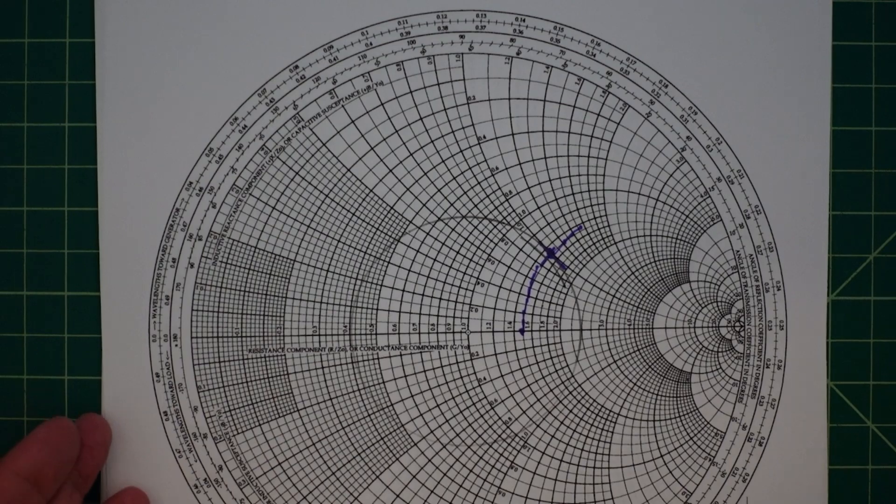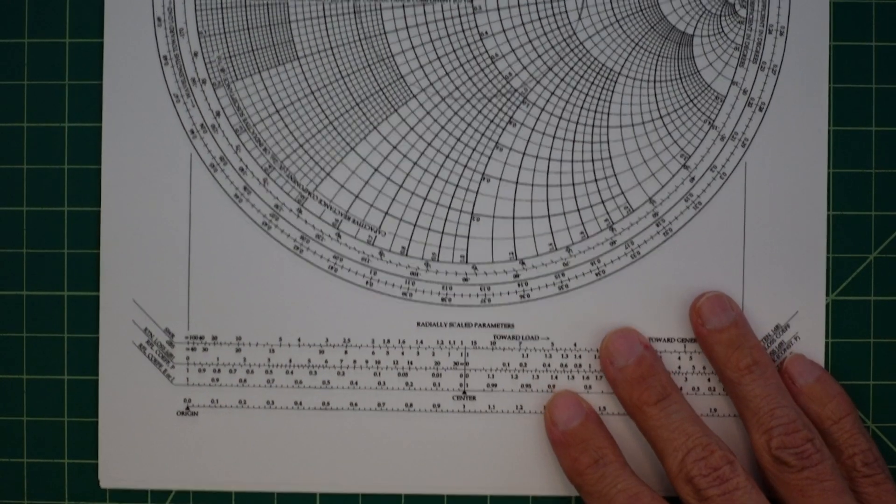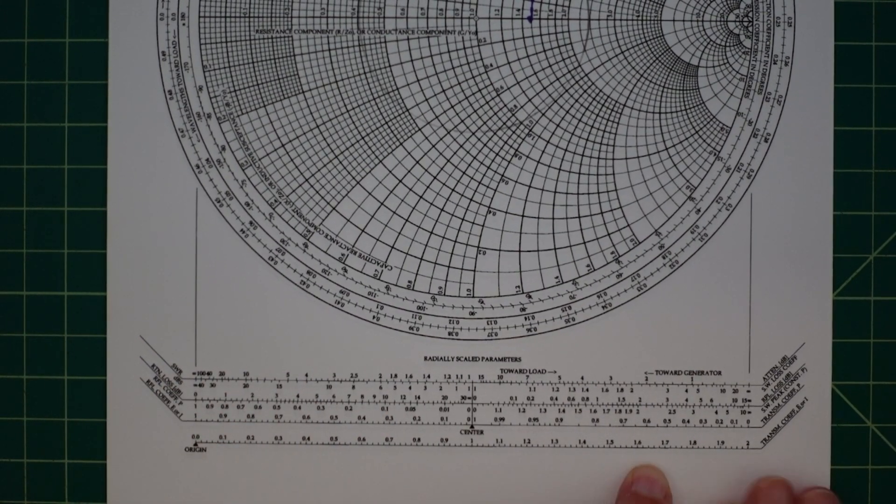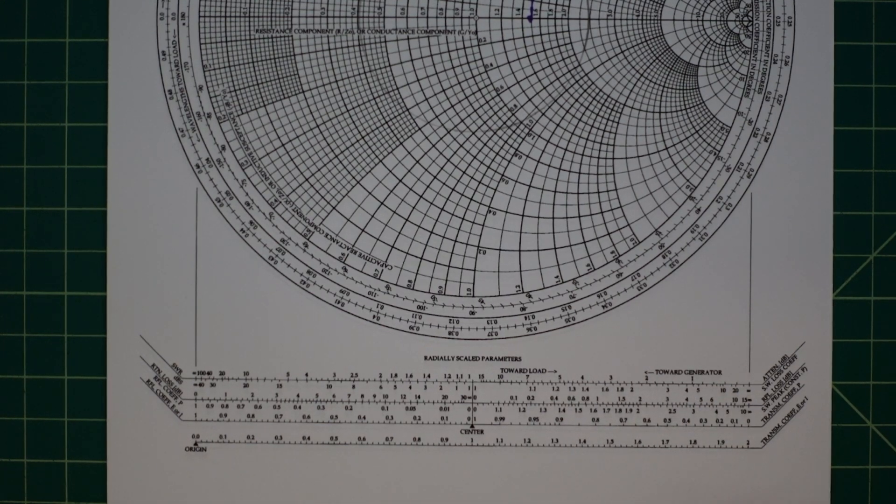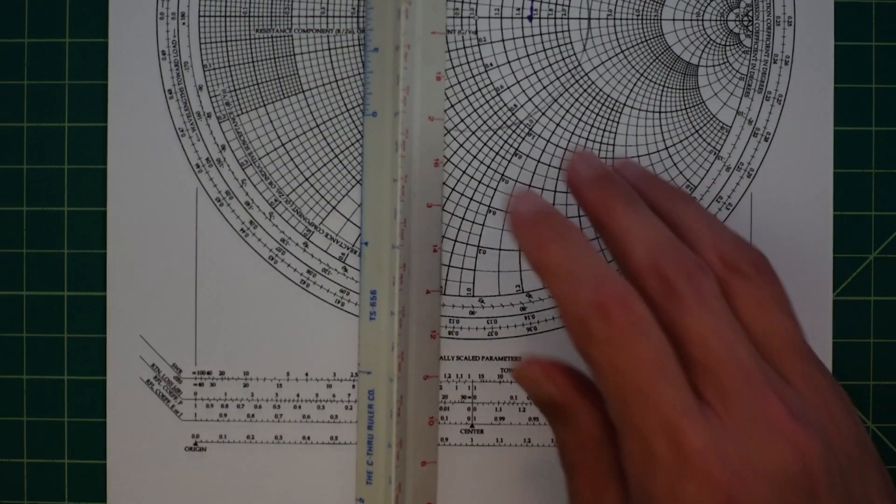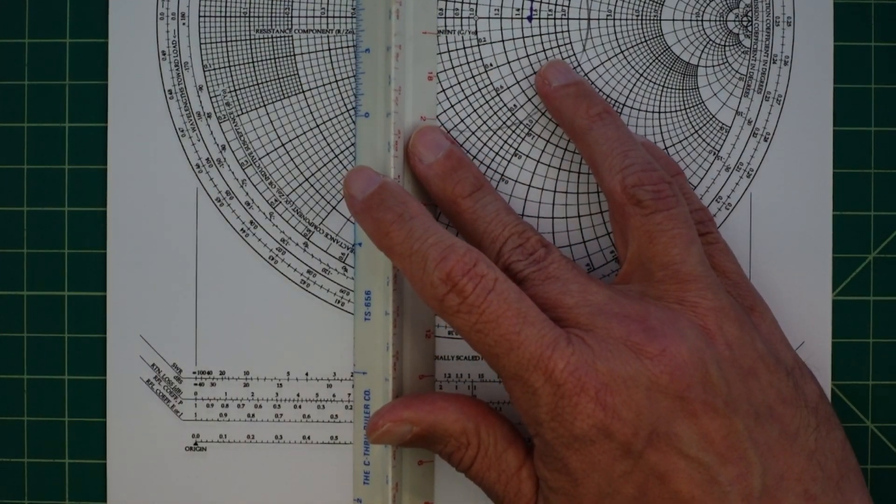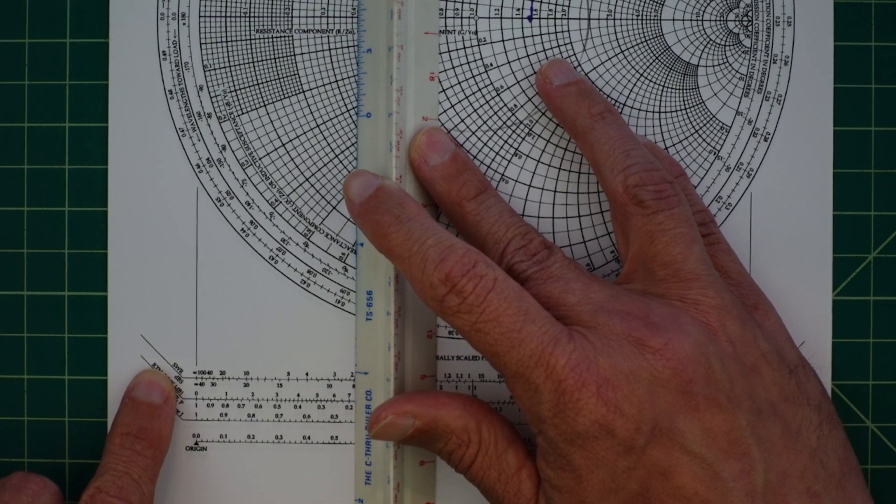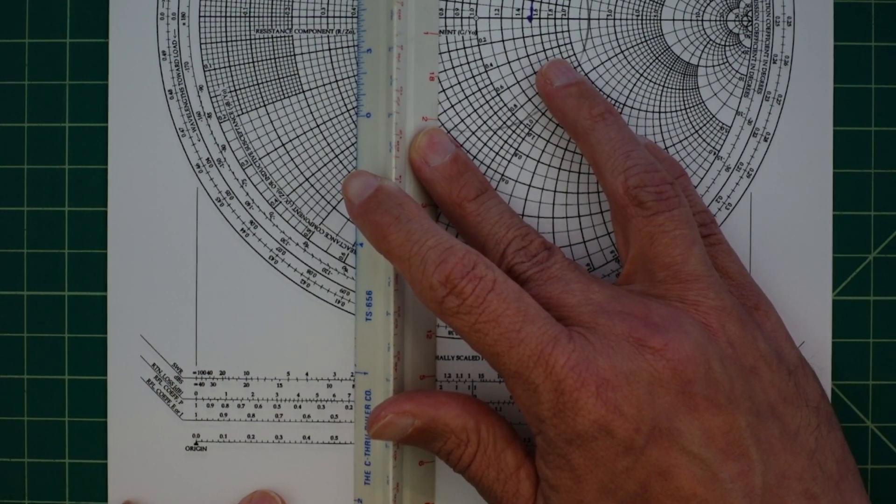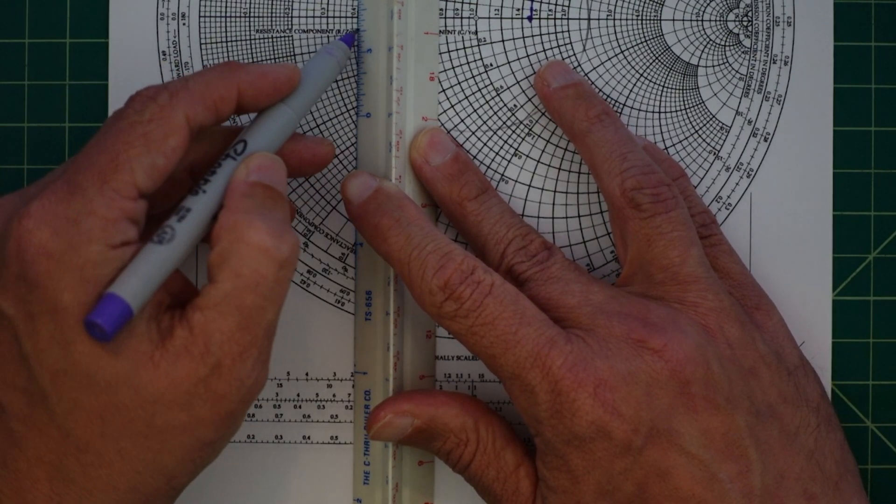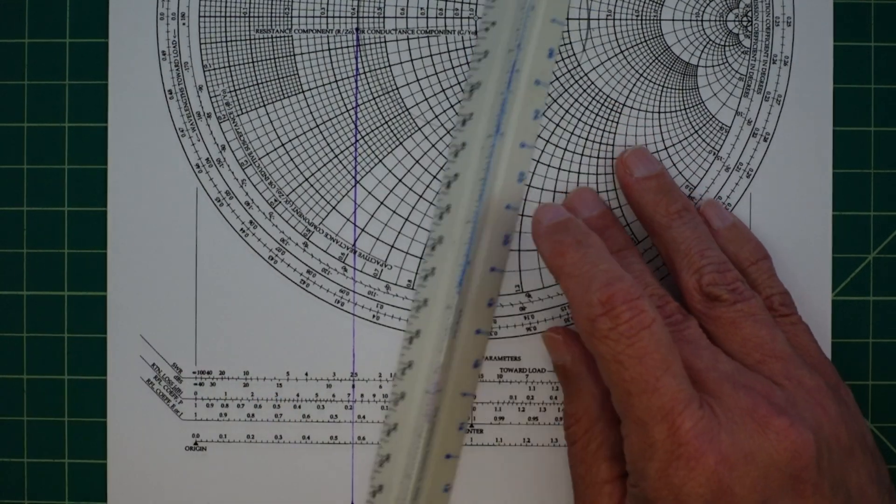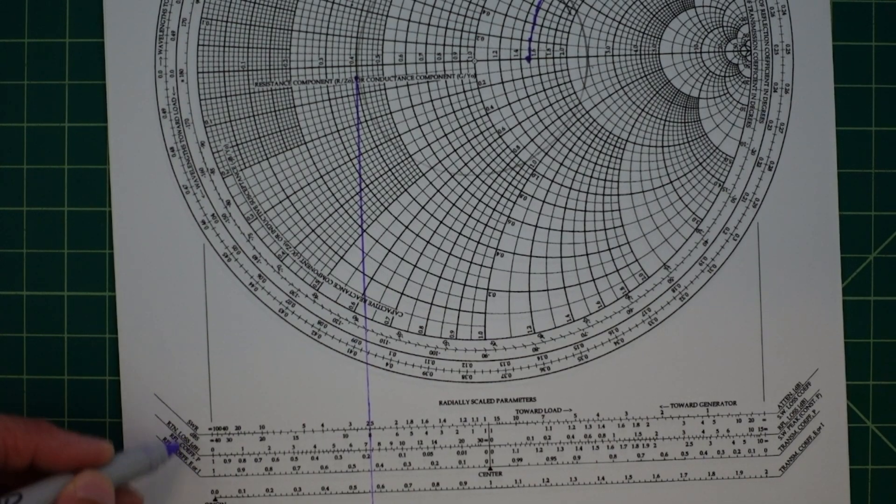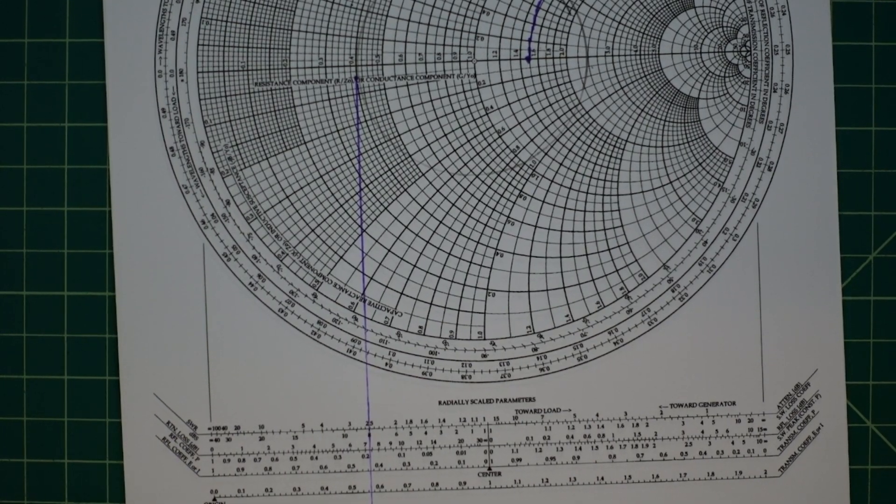Where this SWR circle crosses our equator or our line of pure resistance is going to be our SWR reading. At the bottom of our Smith Chart we have a scaling and the scaling will allow you to do different types of measurements and calculations. We can take a right angle and put that on the outer edge of my circle and draw a straight line down. This top line here is for SWR and that comes down and goes right through our 2.5. By drawing this line down I can gather other measurements like reflection coefficient.